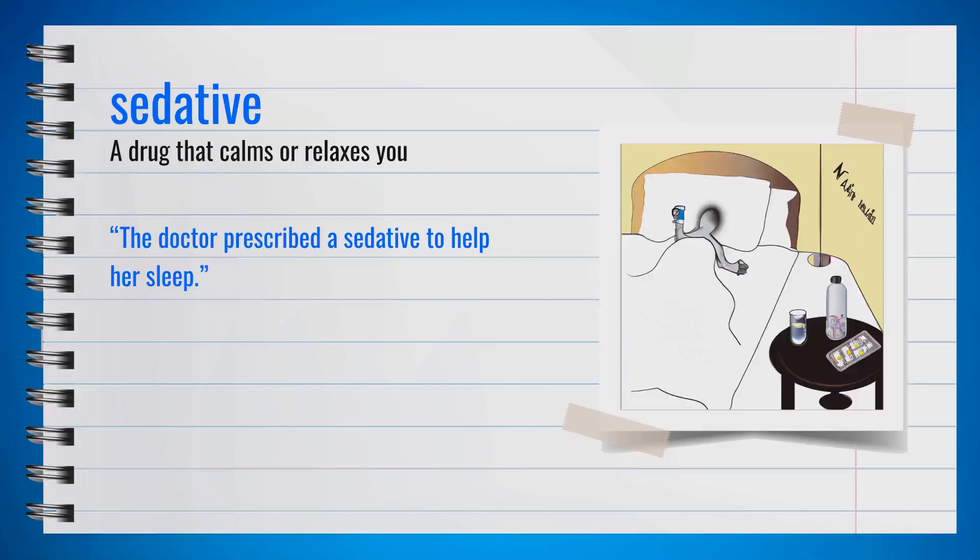The word sedative, spelled S-E-D-A-T-I-V-E, is a noun pronounced 'sedative.' A sedative is a drug that calms or relaxes you. Synonyms include tranquilizer or calmative. For example, the doctor prescribed a sedative to help her sleep. In summary, a sedative is a drug that calms or relaxes you.